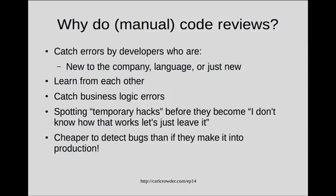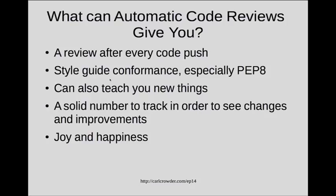Automatic code reviews can give you almost all of that. They won't give you the business logic side — as far as these tools are concerned, an int is an int; they don't care if it's 15 or 5%. But everything else they can pretty much do. The great thing is it happens automatically after every code push. If you put it into your continuous integration — Travis, Jenkins, or whatever — then after every push you get feedback to see what you just did and whether it was better or worse. You can get PEP8 compliance and that kind of stuff.